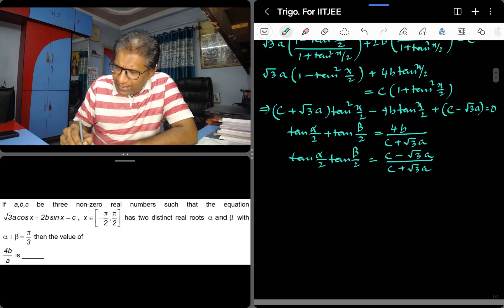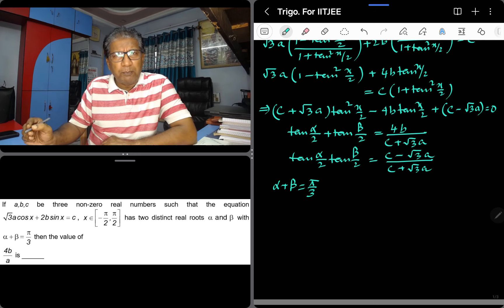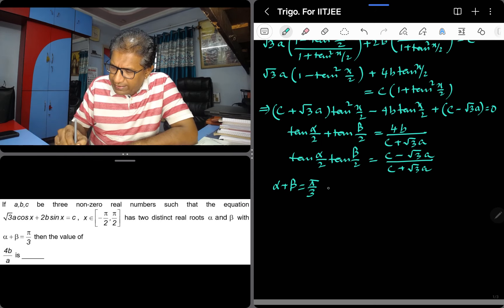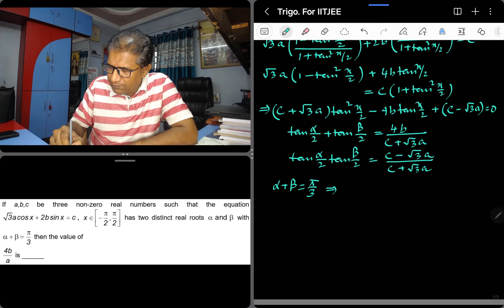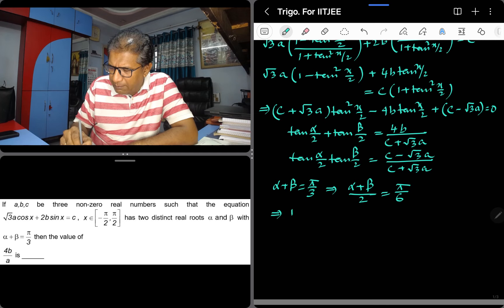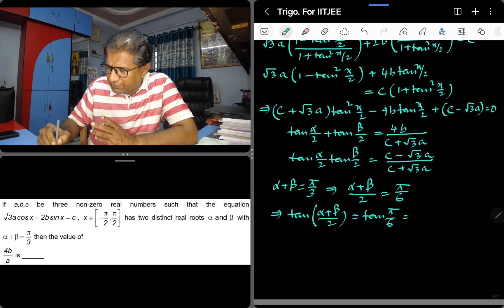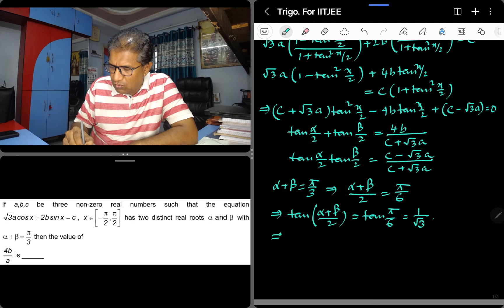Now, another condition is given here. Alpha plus beta is pi over 3. It means alpha by 2 plus beta by 2 equals pi over 6. If we take tan on both sides, tan 30 degrees value is 1 over root 3. So left hand side, let us just break it.